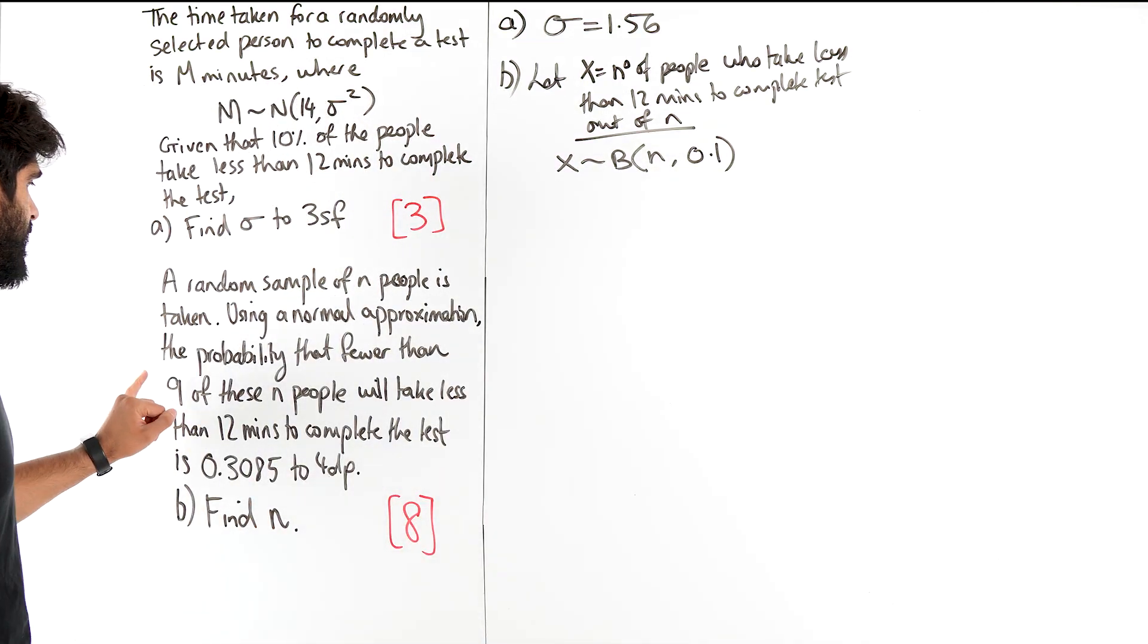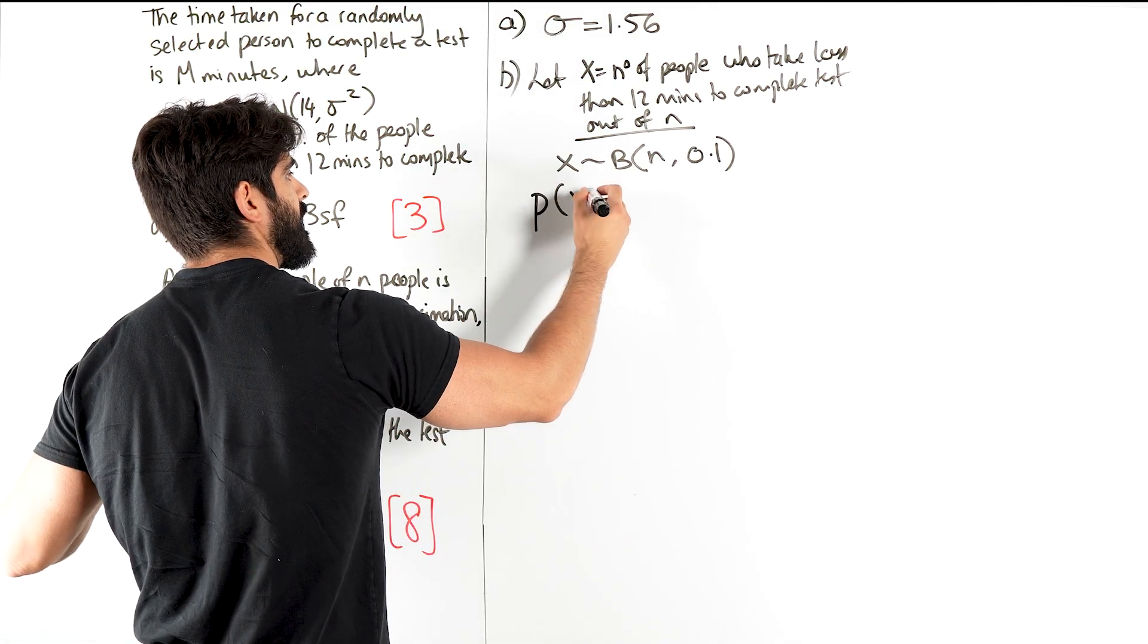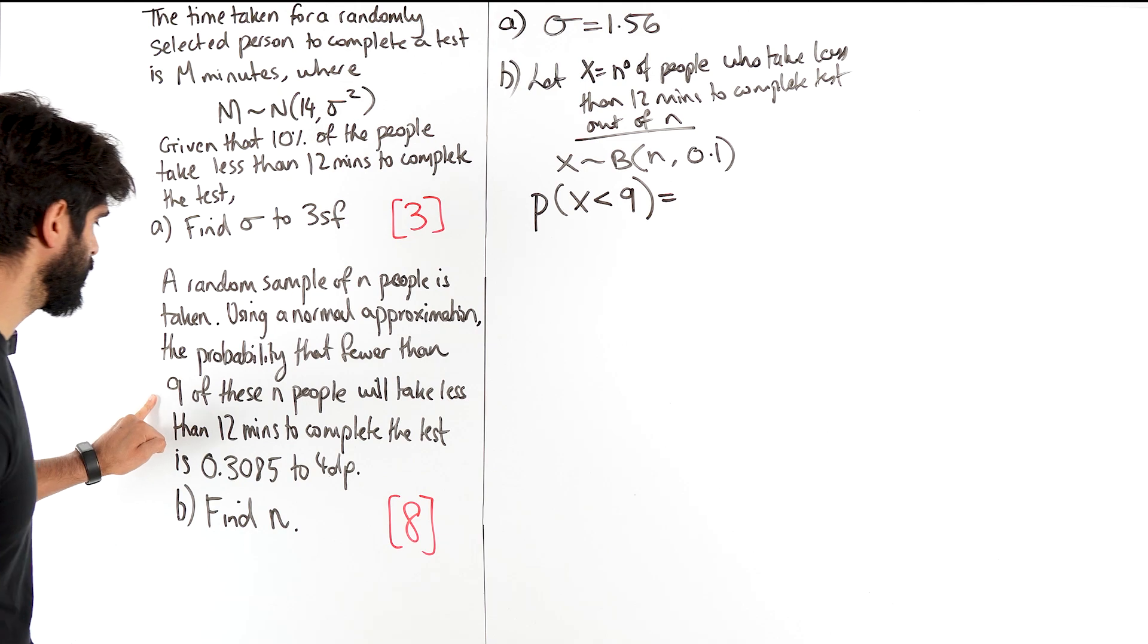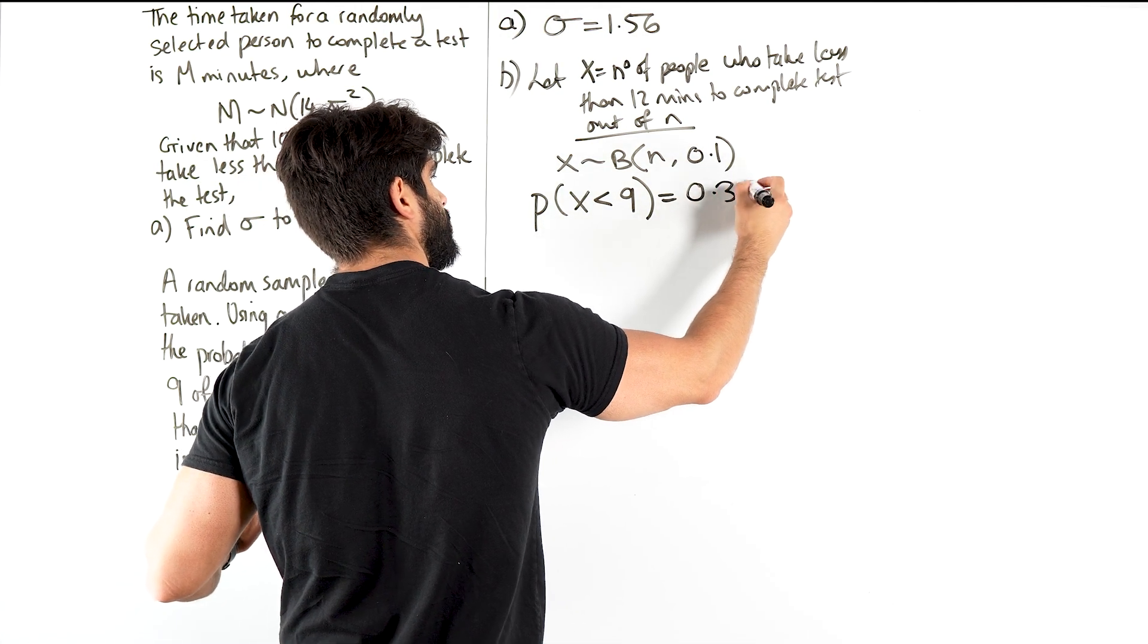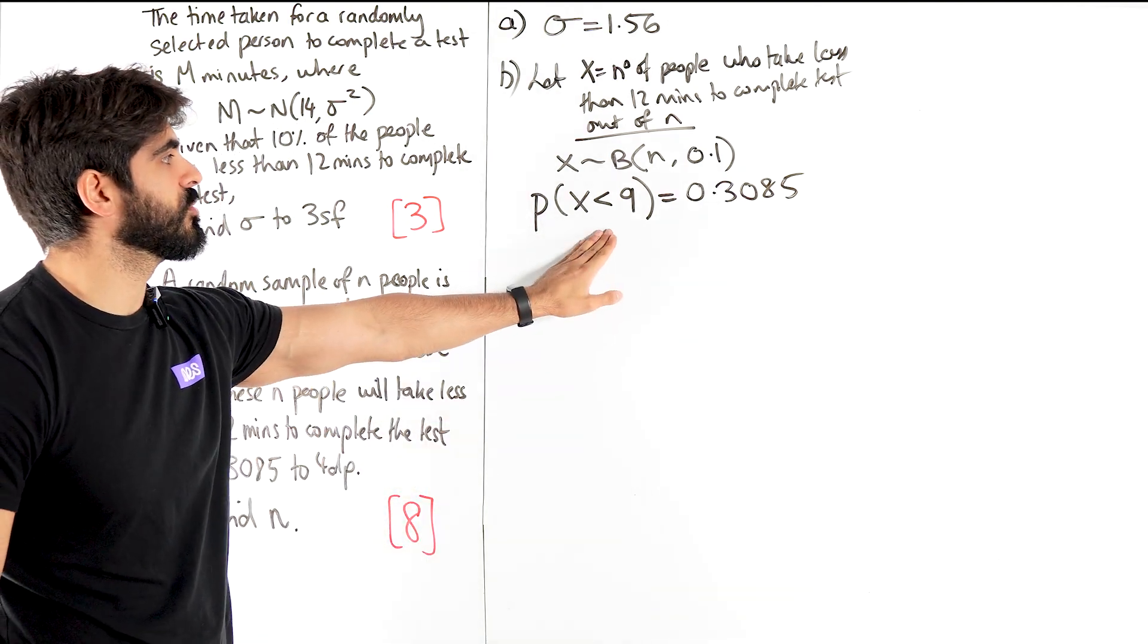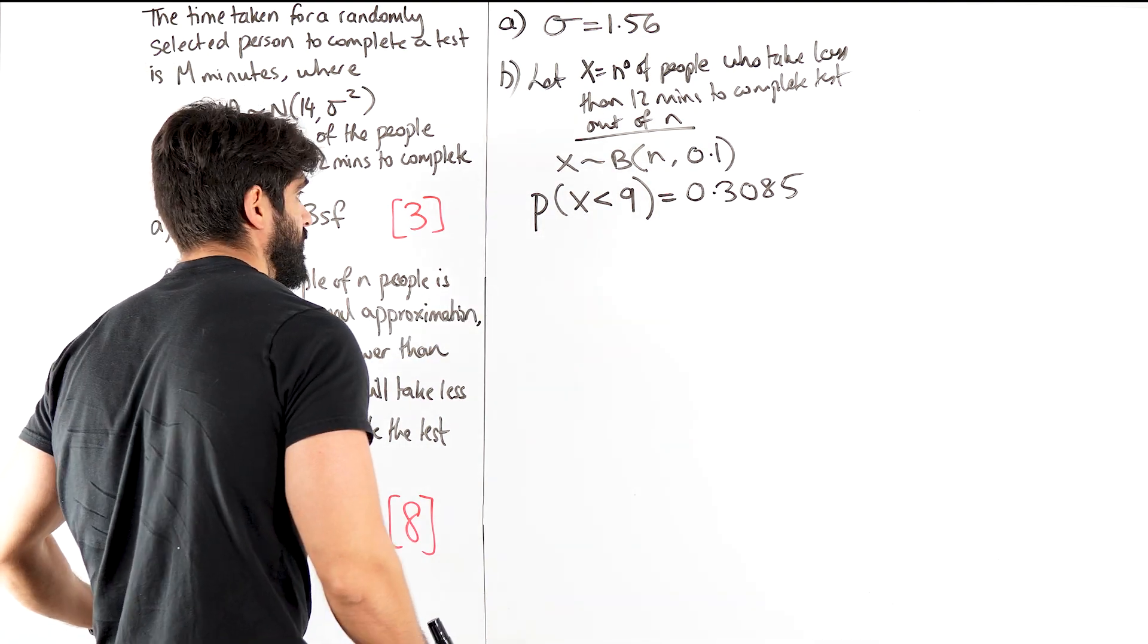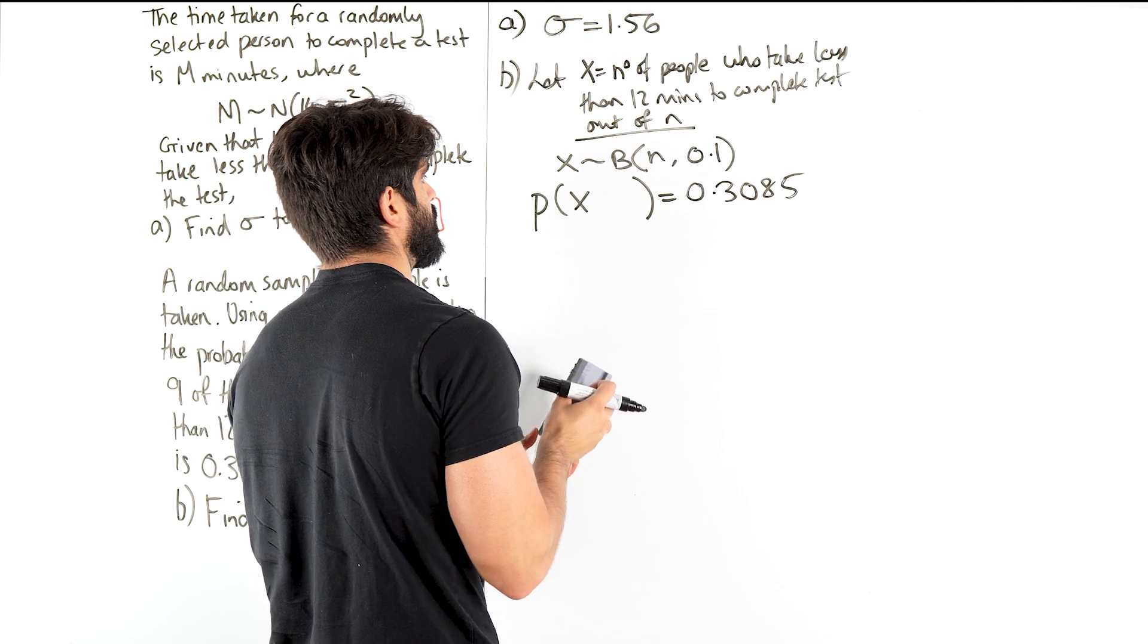Now they're saying the probability that fewer than 9, so the probability that X is fewer than 9, is equal to 0.3085. But they want us to then move into a normal approximation. Now the first thing we should always do is make sure that this is an equal to sign. So less than 9 means less than or equal to 8. So this is less than or equal to 8.